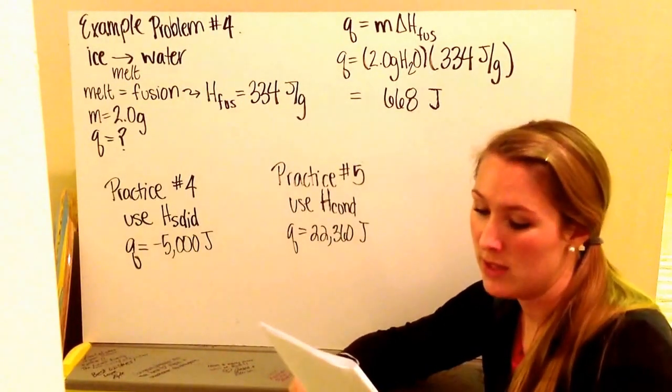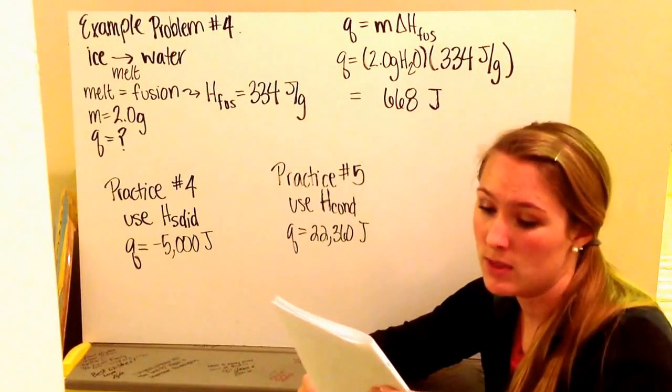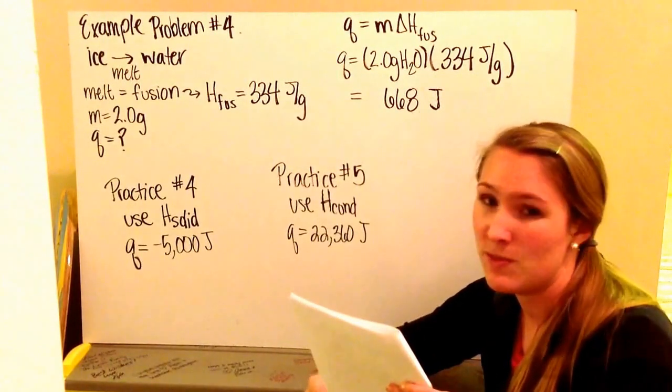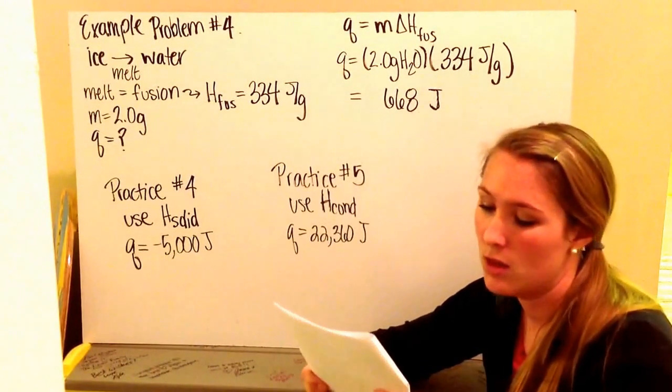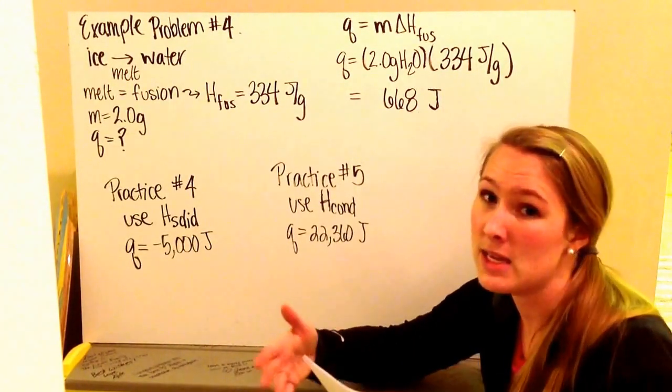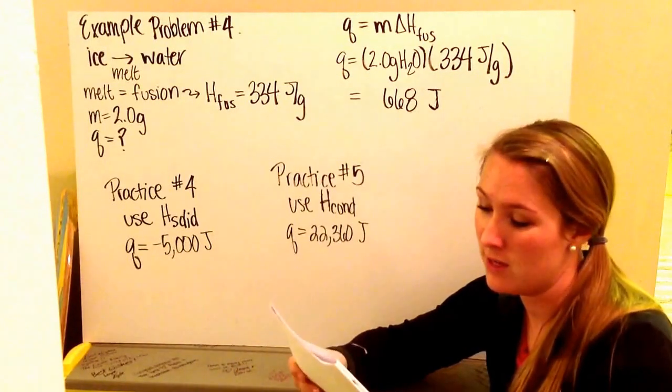Practice problem number 4 reads if 15 grams of liquid water freeze, how much energy must have been added to the ice. I need to locate what kind of phase change is it, and then what is my heat of the phase change for that phase change.